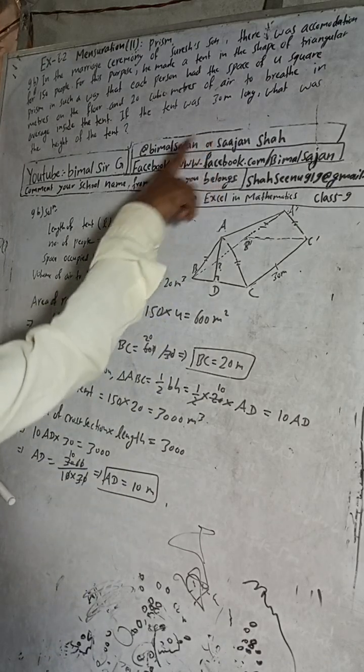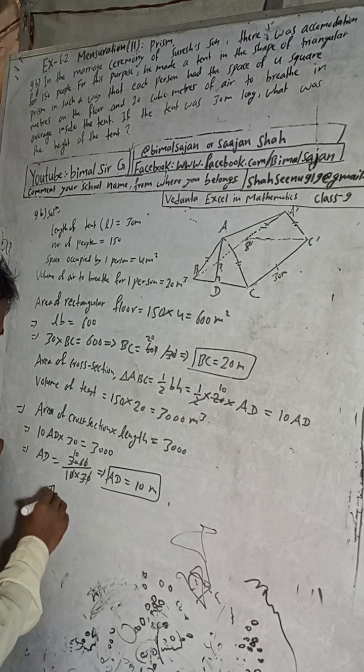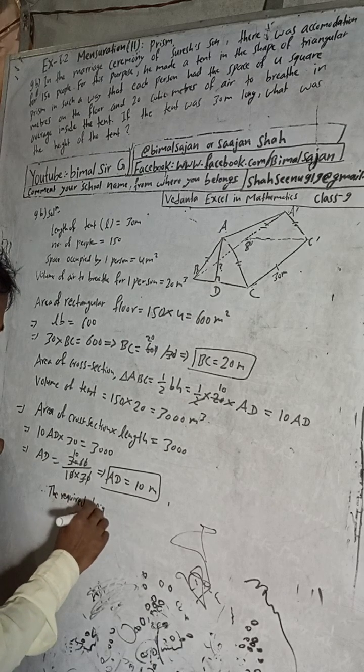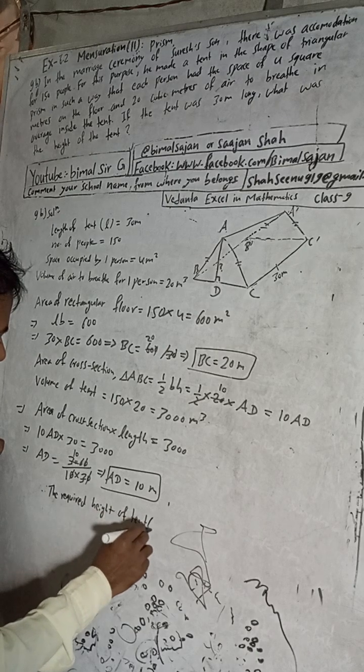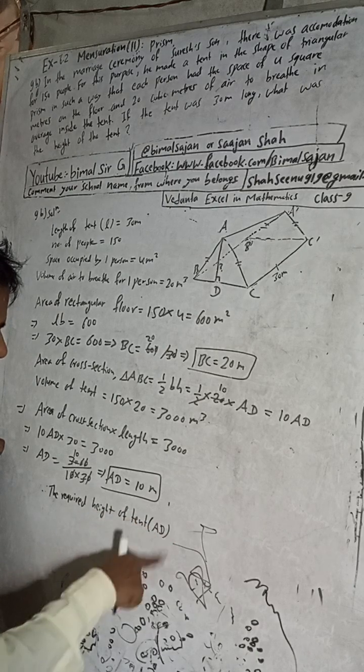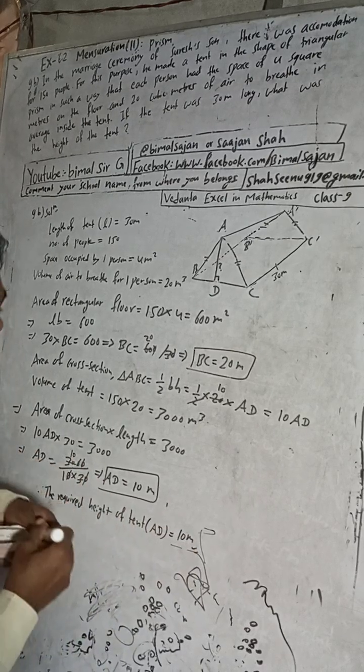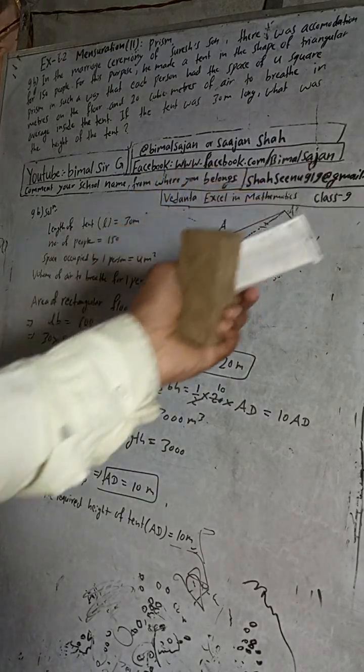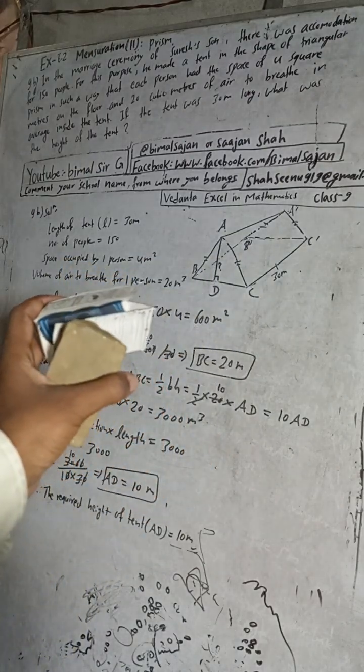Now AD is equal to 3000 divided by 10 into 30. This implies AD is equal to, when we cancel, AD is equal to 10 meters. We got height, 10 meters. Therefore, the height of tent, AD, is equal to 10 meters.